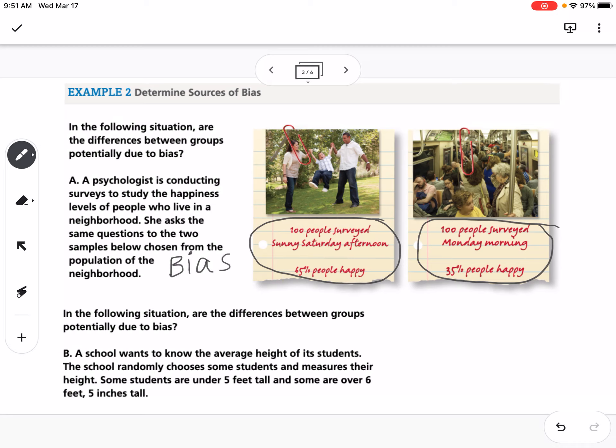The second one says, in the following situation are the differences between groups potentially due to bias. A school wants to know the average height of its students. The school randomly chooses some students and measures their height. Some students are under 5 feet tall and some are over 6 feet 5 inches tall. Just because we have extremes as far as the height, that doesn't mean that there's bias because the students were randomly selected. So this would not be an example of bias.